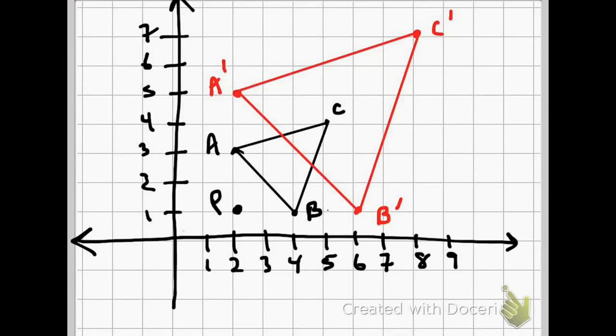Hey class, it's Mr. M. This question is asking: what is the scale factor for this dilation if figure ABC is dilated around point P, which is here, to create the new figure A prime, B prime, C prime?